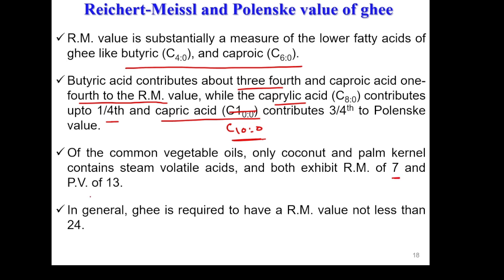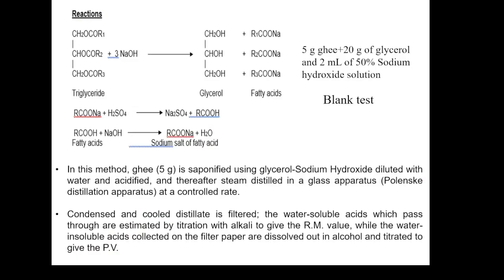Among common vegetable oils, only coconut oil contains steam volatile acids and exhibits an RM value of 7 and a Polenske value of 13. These two fats are called problematic fats because using normal physicochemical constants, they are very difficult to detect in ghee due to their steam volatile nature. As per the FSSAI standard, ghee is required to have an RM value of not less than 24.